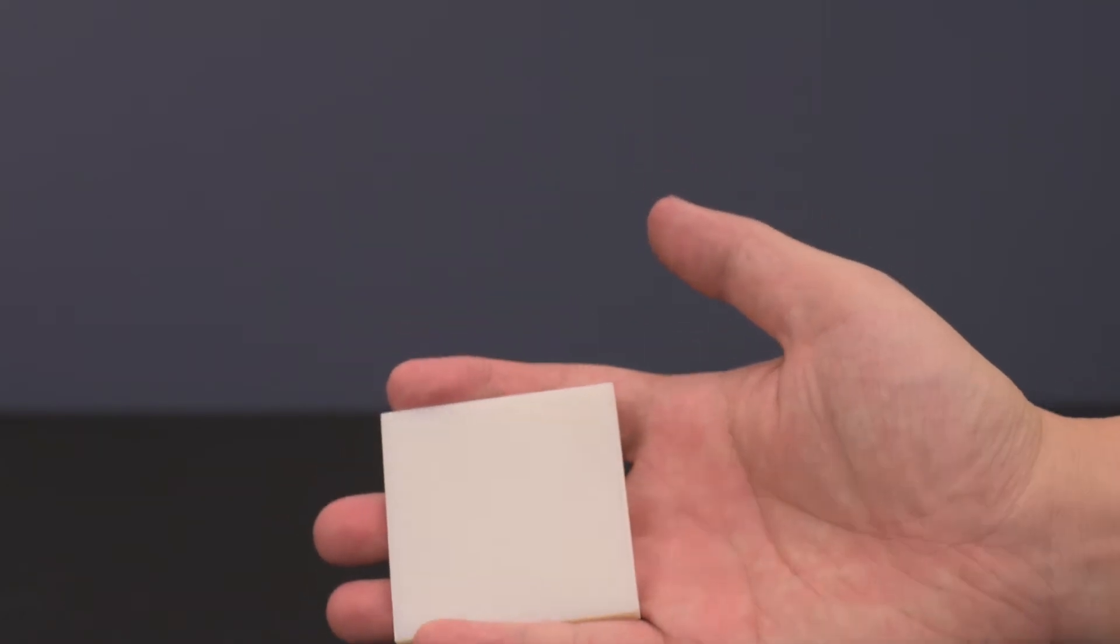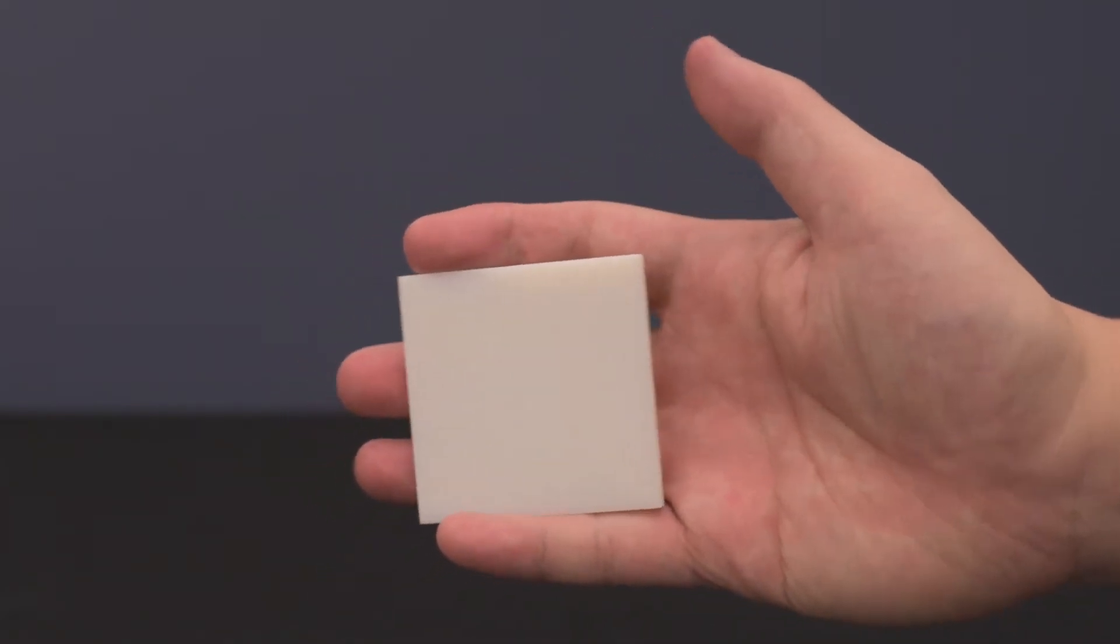We present AirCode, a method to tag physical objects. The codes are imperceptible to the human eye, yet machine readable using our imaging method.